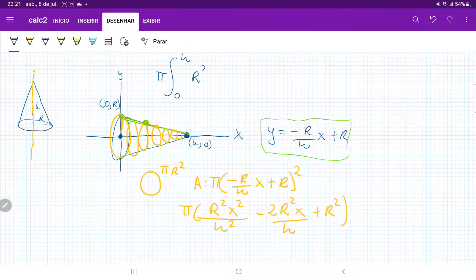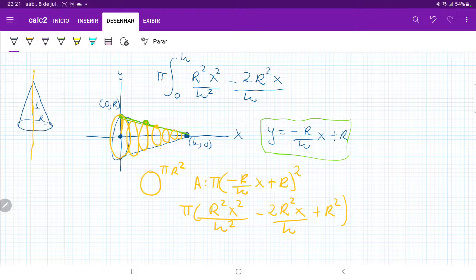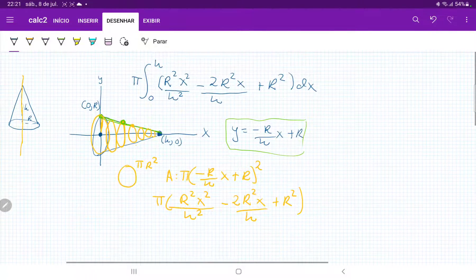And then our integral, which is going to be r squared x squared over h squared minus 2r squared x over h plus r squared, and all of this times dx. So once we have this, we can integrate,